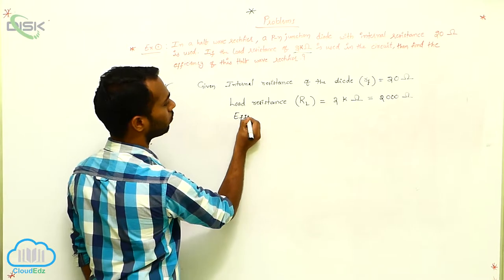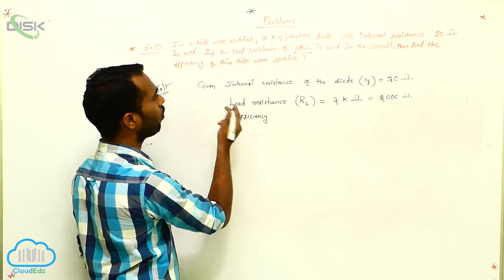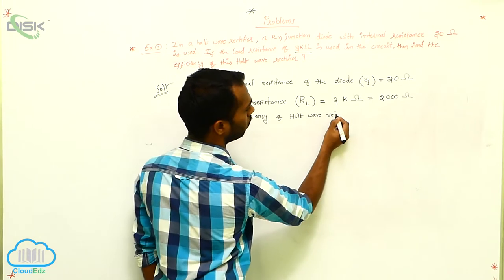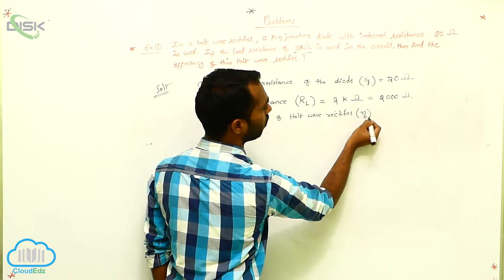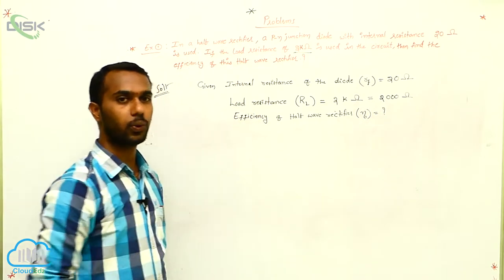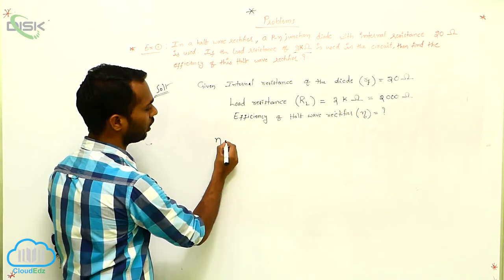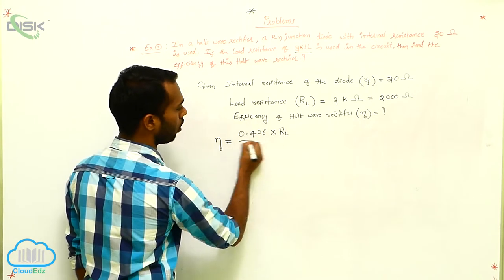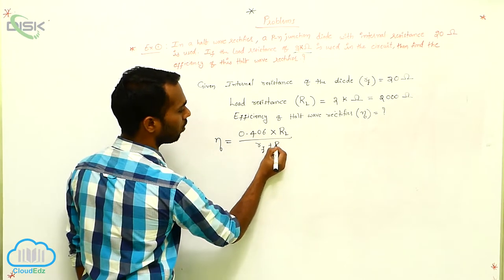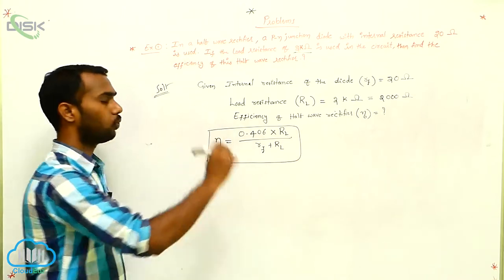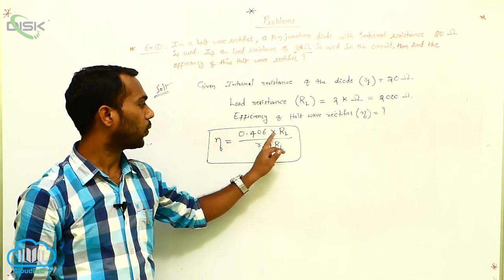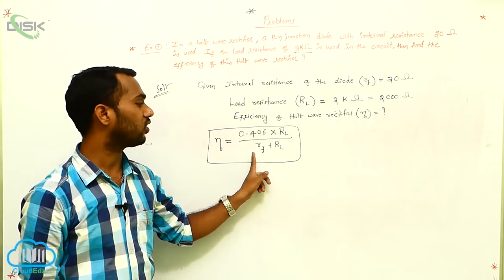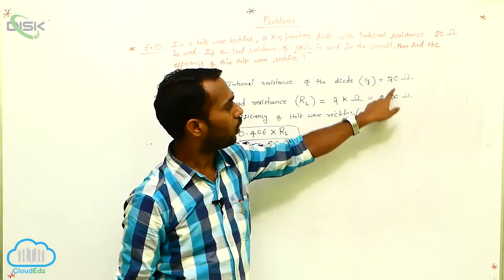We have to calculate the efficiency of the half wave rectifier. The formula is: eta equals 0.406 multiplied by RL divided by (RF plus RL), where RF is the forward resistance (internal resistance) and RL is the load resistance.